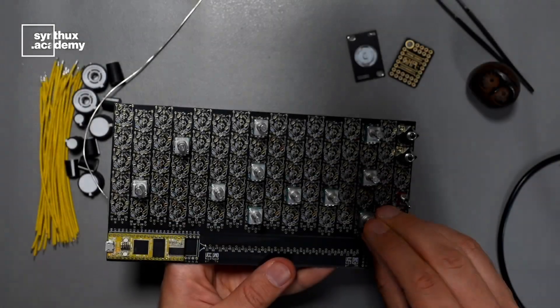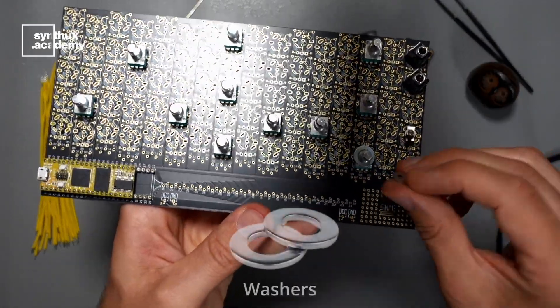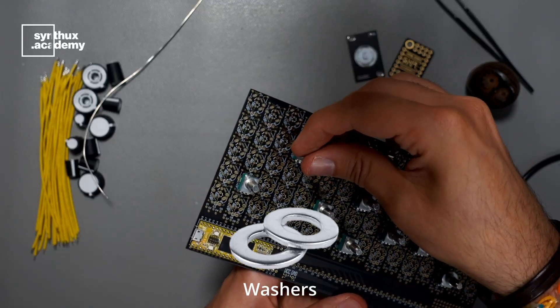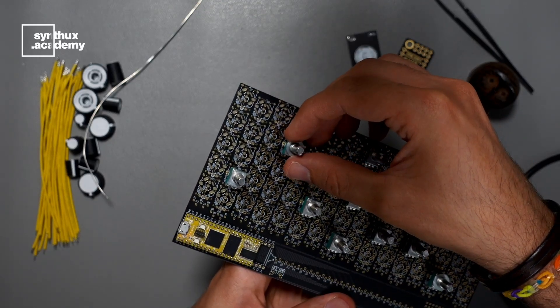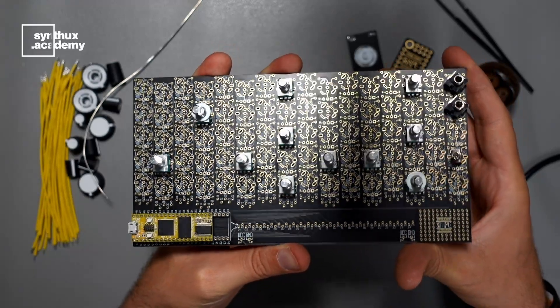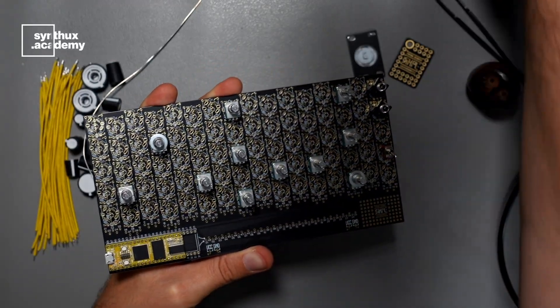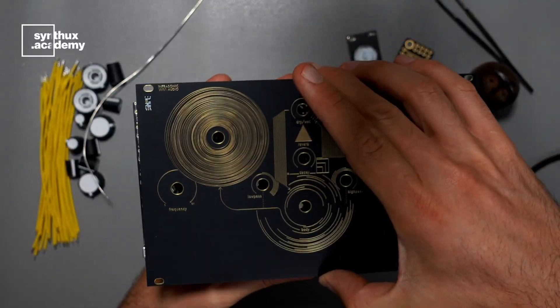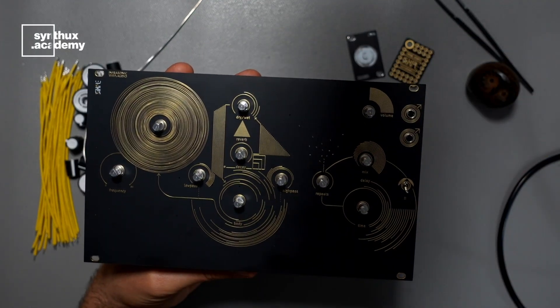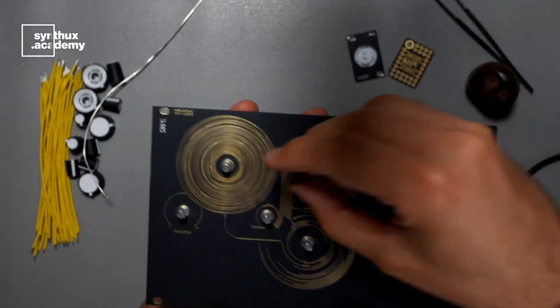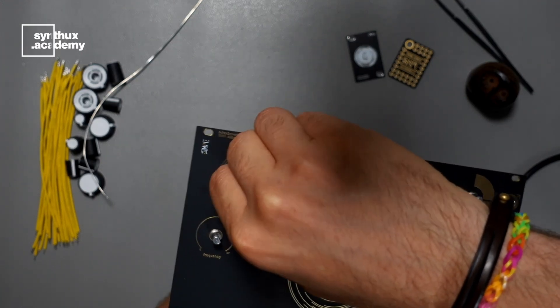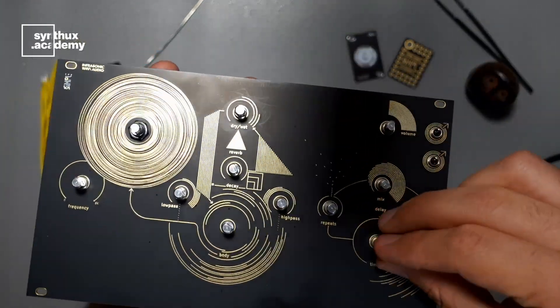Once we have that set, we add two washers on this potentiometer and two washers on this potentiometer. What we're trying to do now is to basically close the front panel on top of the components and then solder. This will allow us to keep all the components in place, so no matter if we take off the front panel or put it back, it'll always fit perfectly, because the components were soldered with the front panel connected to them.